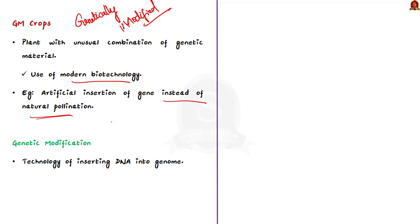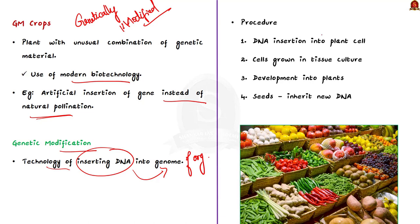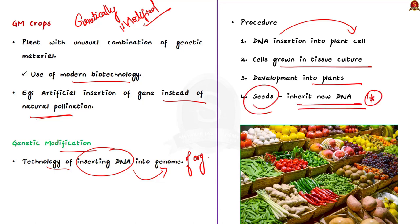Genetic modification is a technology that involves inserting DNA into the genome of an organism. To produce a GM plant, new DNA is transferred into plant cells. After the new DNA is transferred to plant cells, they are usually grown in tissue culture where they develop into plants. The seeds produced by these plants will inherit the new DNA, and the plants formed from these seeds will also inherit the new DNA. This is how GM crops are produced.